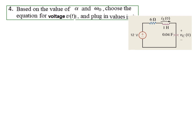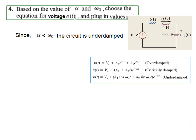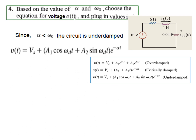Let us move to step number 4. We have to choose the voltage equation based on alpha and omega. We have learned that alpha is less than omega, therefore this circuit is an under damped circuit. From the three choices we pick the equation for the under damped case. Now the unknowns are: Vs, omega_D, alpha (already calculated), and A1 and A2. Omega_D is given by its formula; plugging in omega and alpha, omega_D equals 4.